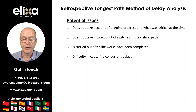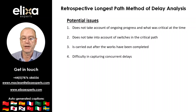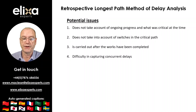A further consequence of not identifying the actual or contemporaneous critical path at the time is that the method can struggle to deal with concurrency, where multiple events are causing critical delay to completion at the same time. As such, it might not effectively differentiate between the various delay events happening concurrently.